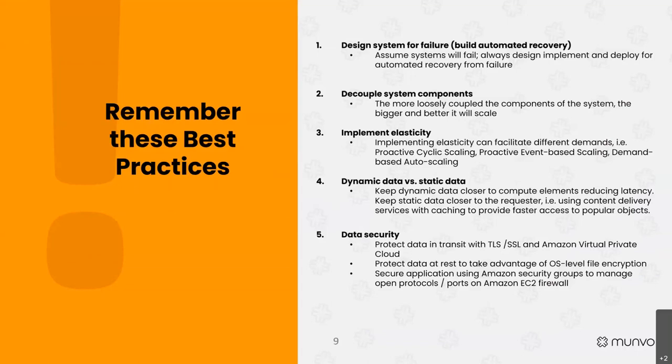Best practice number three: implement elasticity. Elasticity describes how you change the cluster size — the number of computers on your network. With elasticity and that changeability of cluster size, you can implement different scaling schemes: proactive cyclic scaling, proactive event-based scaling, and demand-based auto-scaling. These patterns define how you respond to metrics coming back from your servers — scaling depending on a certain time cycle or specific events to keep up with demand.